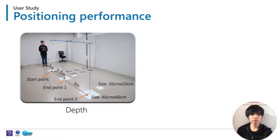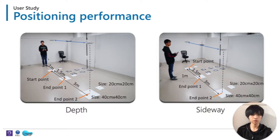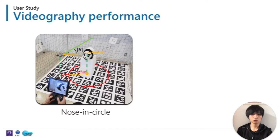We made studies to test the performance of Pinpoint Fly compared to a joystick. The first study focuses on positioning performance: the user flies the drone from a start point, the timer begins, and when the user feels the drone is above the target area, they say OK and the timer stops. The system records task completion time and distance error. The sideways task is similar to the depth task, with the only difference being the view perspective. Another study focuses on videographic performance: participants are required to fly the drone while rotating it to take a video of a panda, and position error, angle error, and task completion time are recorded.